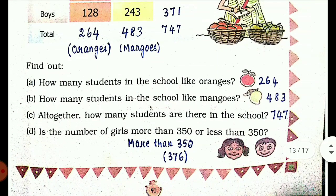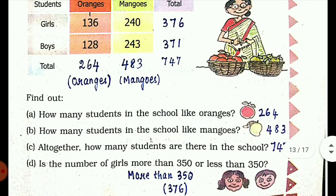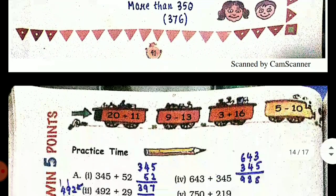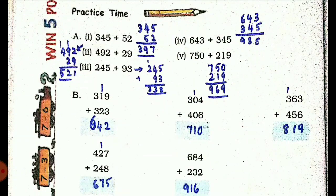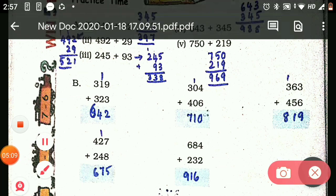Next, Practice Time. This is easy. You can practice and check the answers because you already know addition. Just add and check the answers. Here are 345 plus 52 and other sums. I'll try to solve the first two sums. The remaining you can solve and check the answers.